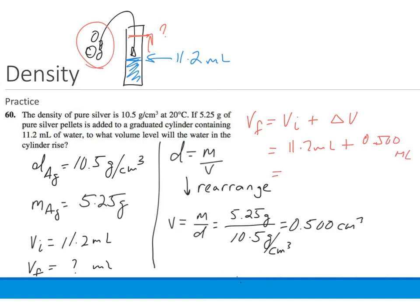And our final volume, V final, is equal to 11.7 milliliters with the correct number of sig figs.